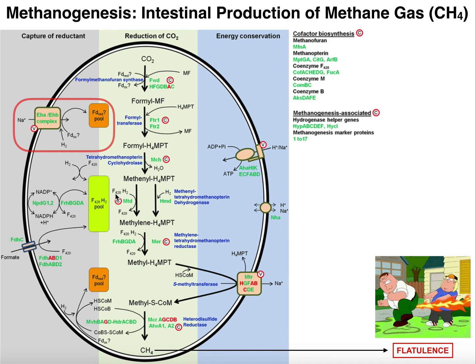From here we're actually now going to use the reducing equivalents from F420. We see electrons coming from NADPH — they're going to reduce F420. Now ultimately there's another source of electrons, and that's hydrogen gas, which can also transfer its electrons to F420, further contributing to the F420 pool. Those electrons are going to ultimately reduce methenyl-tetrahydromethanopterin into methylene-tetrahydromethanopterin.